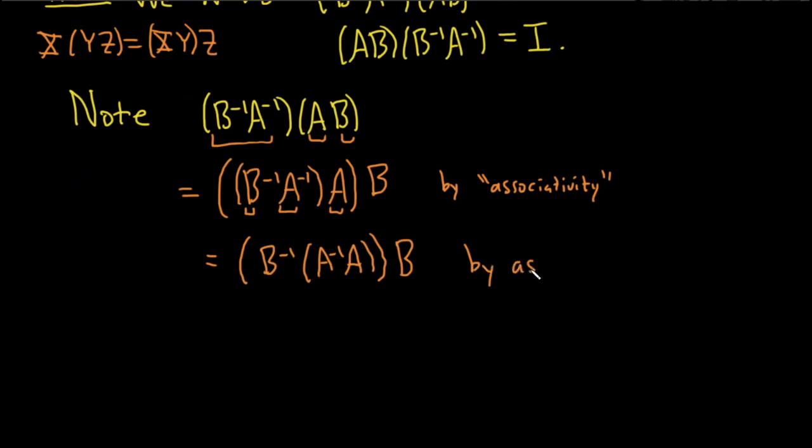I'll just say by ASS, I'll abbreviate it. Good stuff. And now something special happens. A inverse times A, well, that's going to be the identity matrix. So this is B inverse times the identity matrix, and then B. And this is because A inverse is the inverse of A. So it's because A inverse A is equal to I. And this here is just B inverse, B. And this is because I is the identity.